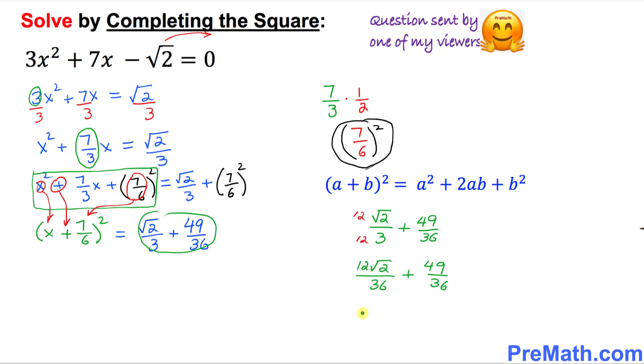Now since we have the same denominator, I can just write it once: (12√2 + 49)/36. And that is the simplified form. So I'm going to go ahead and write down (x + 7/6)² = (12√2 + 49)/36.